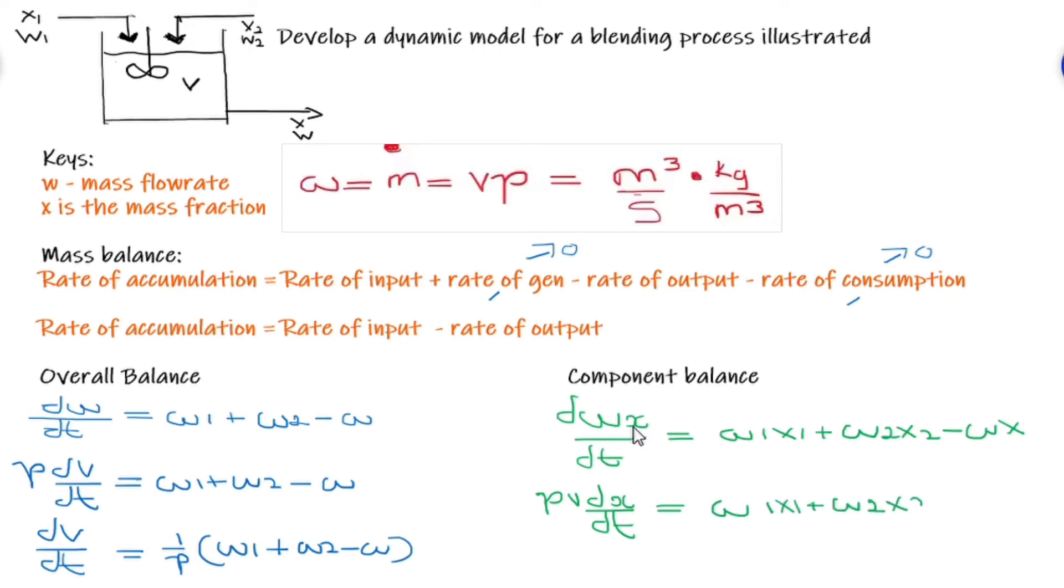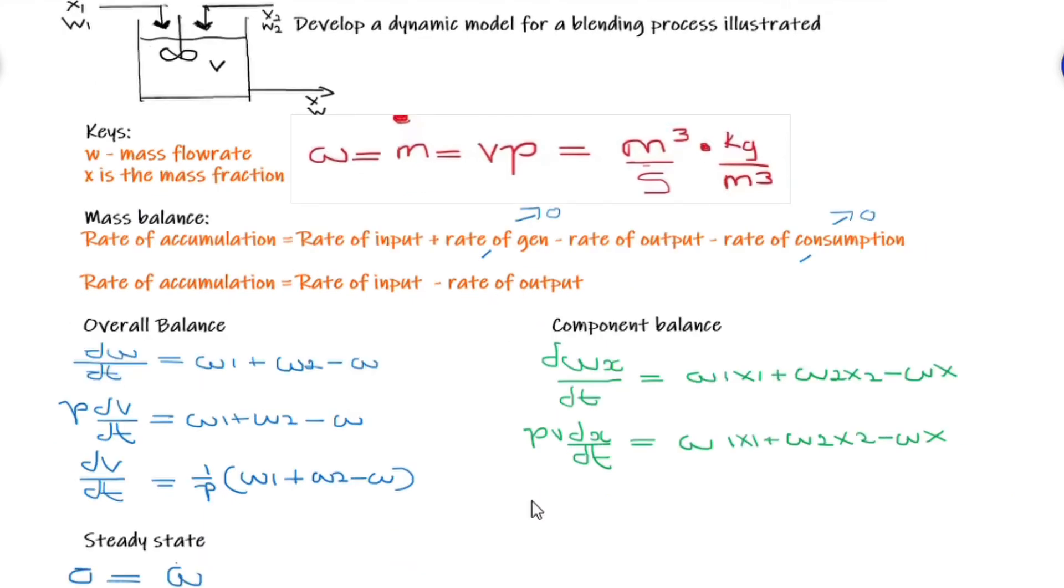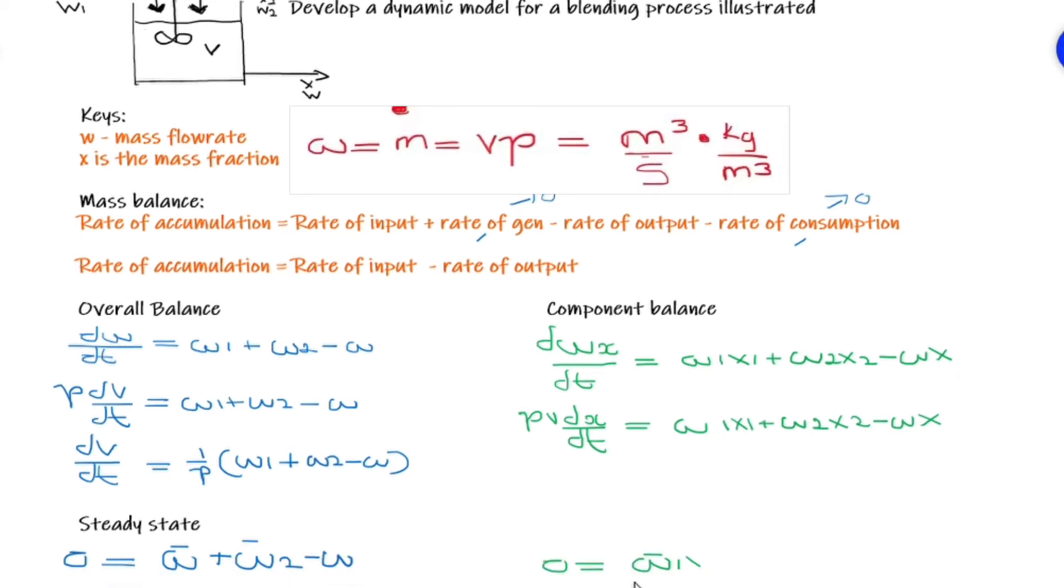We can further represent W, which is our mass flow rate, in its density multiplied by volume. Also, we can assume steady state and at steady state there is no rate of accumulation hence we have everything equated to zero.